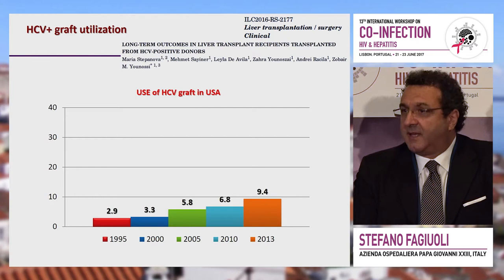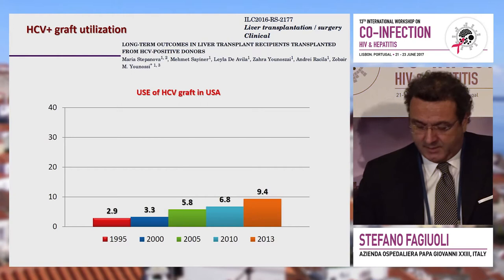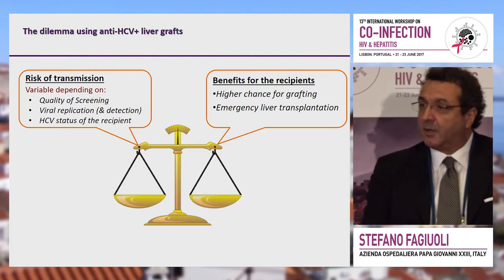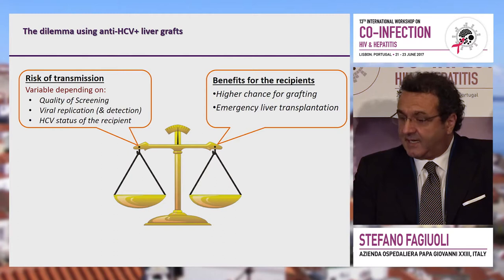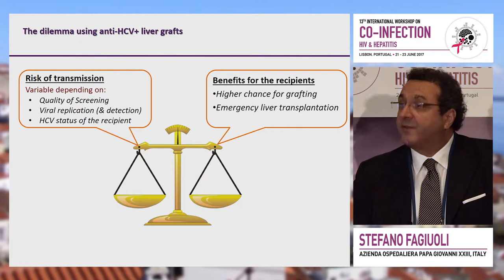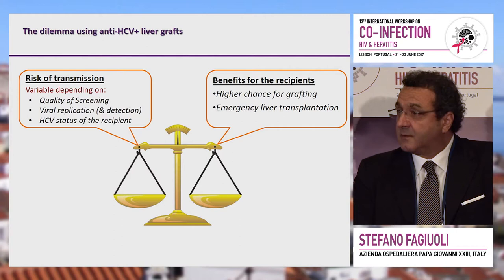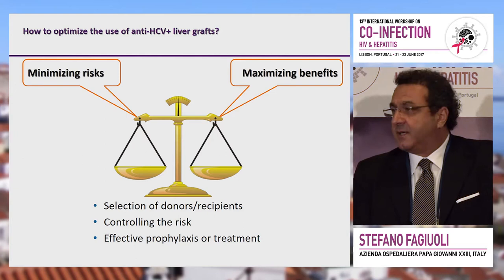The future is much brighter than before because using an organ in the pre-DAA era was very different than using it today. When using those grafts, you have to weigh the risk of transmission, the quality of donor screening, the level of replication, and the capability of detecting replication. You have to match the status between the two patients, but you gain great benefits — you increase the chance of being transplanted, and this is especially important in emergency transplantation.